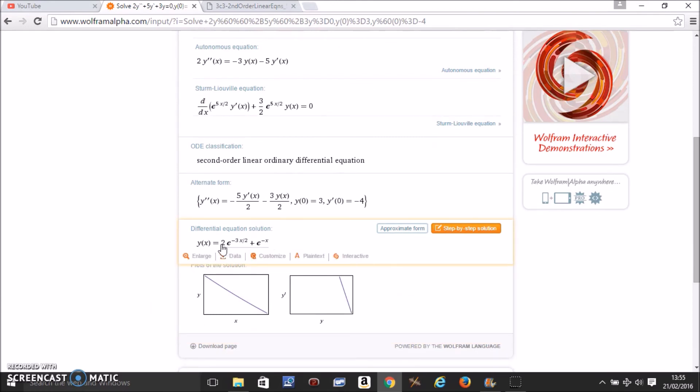So this is of the form ae to the power m1x plus be to the power m2x, if the two solutions of the quadratics are different. You should refer to notes for more knowledge on that.